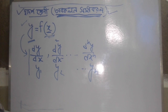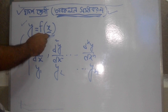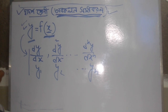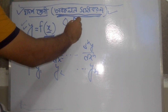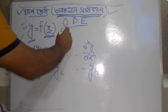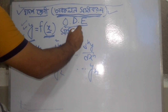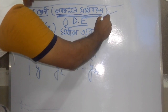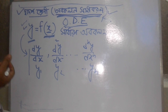You will be able to do the Avokal-Somikoron. This is an Avokal-Somikoron, which is an ordinary differential equation. This is an Avokal-Somikoron. We have told that it is an Avokal-Somikoron.